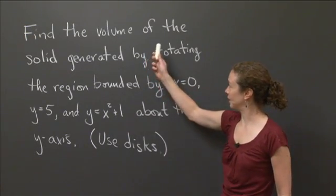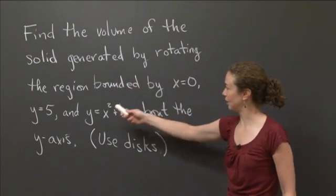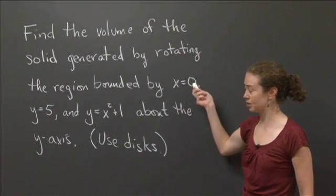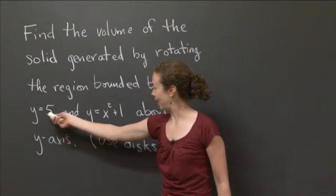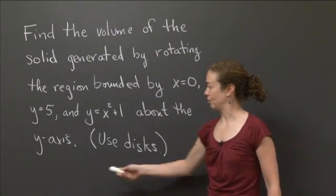So what I want us to do in this one is find the volume of the solid generated by rotating the region bounded by these three curves: x equals 0, y equals 5, and y equals x squared plus 1 about the y-axis.